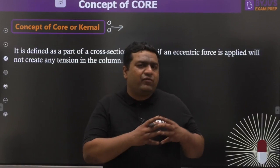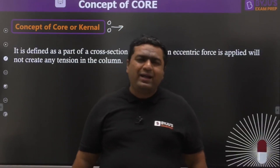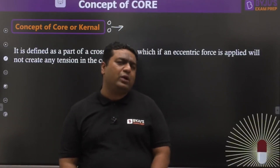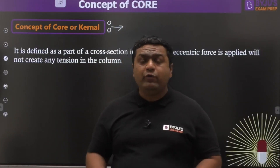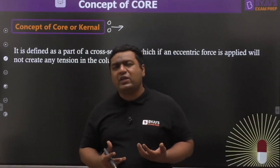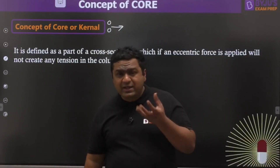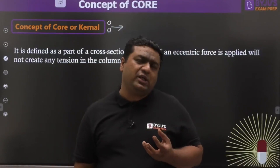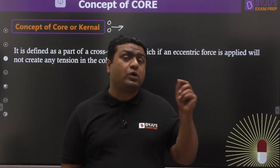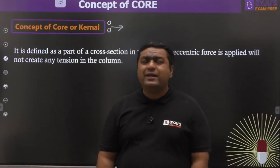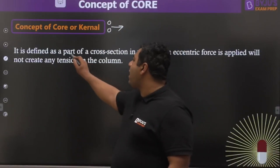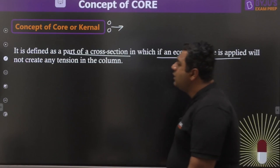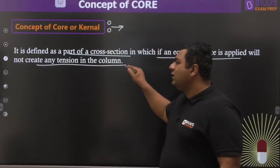Brittle materials are weak in tension. So we want to find out a region in which if eccentric loading is applied in the column, we would not have any kind of tension in the column. We are in search of that region, and that region of the cross section is given the name of core, kern, or kernel.